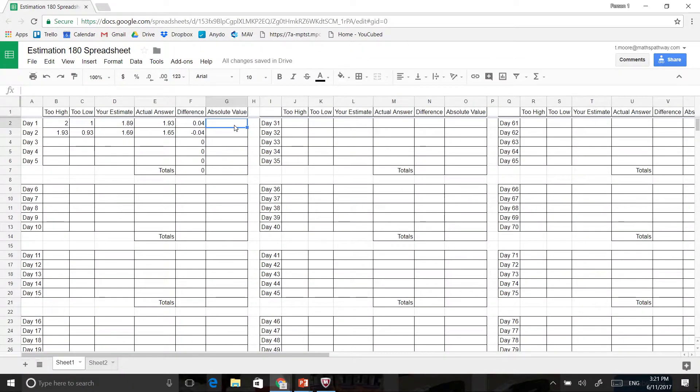And to do that, what you can just do is go equals, and you go abs for absolute, then go bracket, and I'm going to just choose the absolute value of this. And what that means is any negative answers become a positive answer.